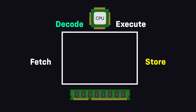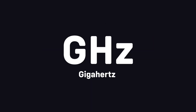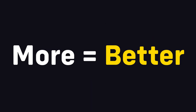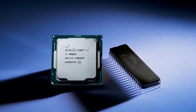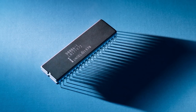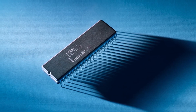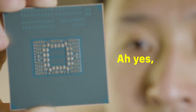You can measure a CPU's clock speed in gigahertz — the more gigahertz, the faster the logic calculations. Originally CPUs had a single core, but in recent years multi-core CPUs have increased the speed and performance of the cycle.